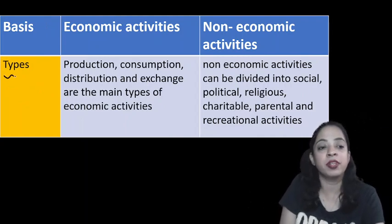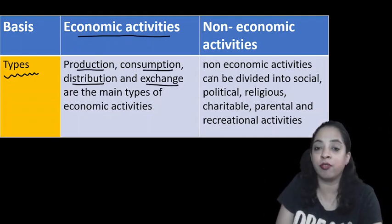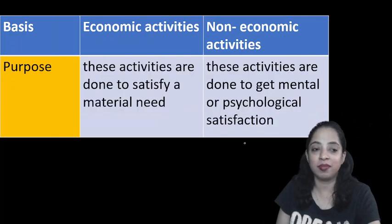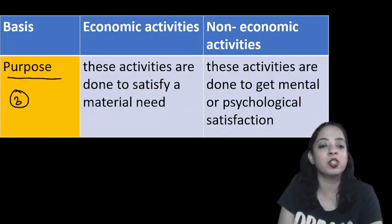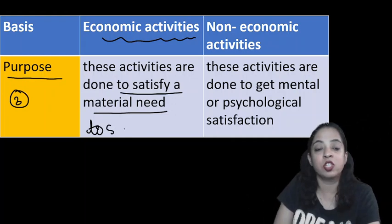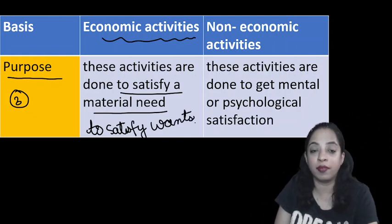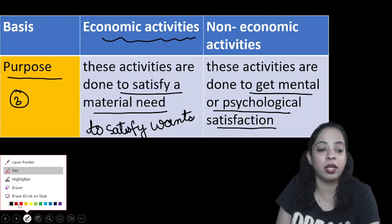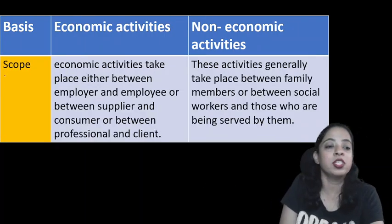The second basis of differentiation is types. The types of economic activities are production, consumption, distribution, and exchange. The types of non-economic activities are social, political, religious, charitable, parental, and recreational. The third basis is purpose: the purpose of economic activities is to satisfy human wants — material needs — while the purpose of non-economic activities is to get mental or psychological satisfaction.